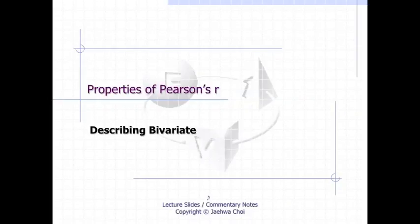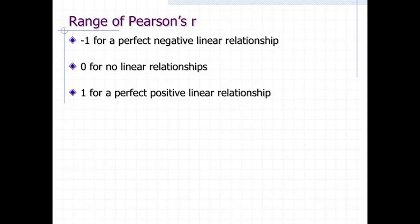Properties of Pearson's R. A basic property of Pearson's R is that its possible range is from negative 1 to 1. The lowest possible correlation of negative 1 means there is a perfect negative linear relationship. A correlation of 0 means no linear relationship, and the highest possible correlation of 1 means there is a perfect positive linear relationship.